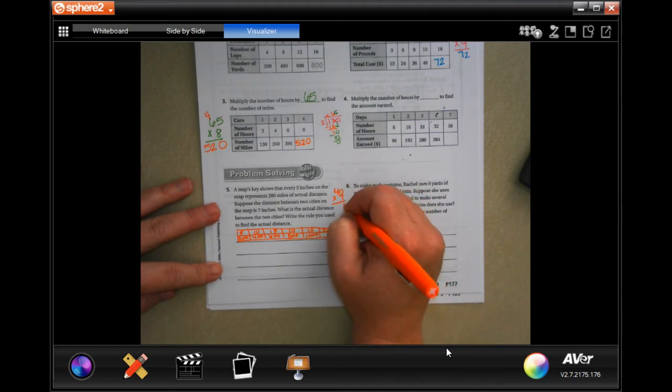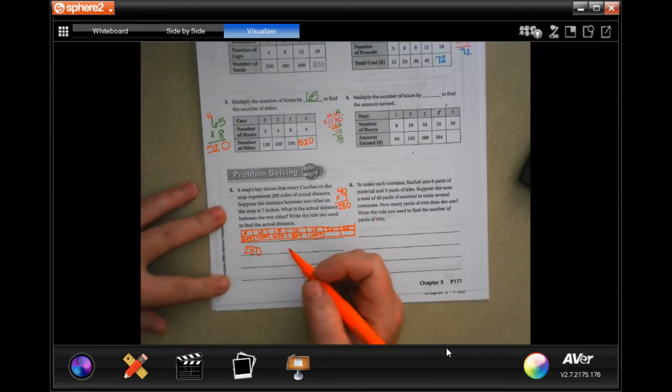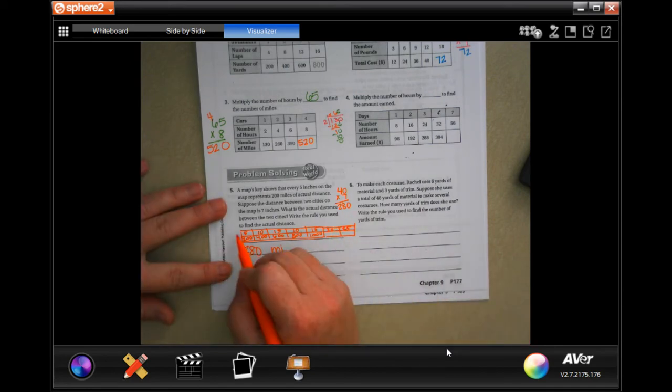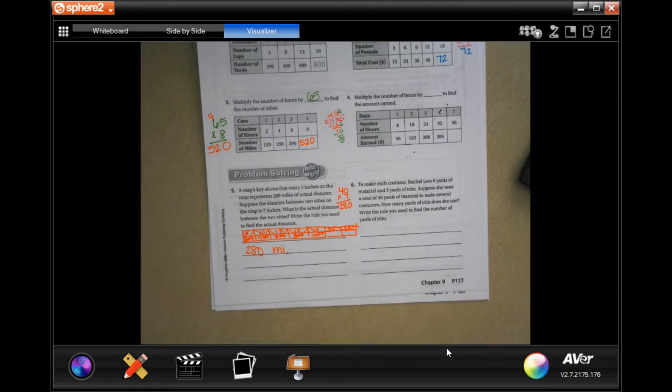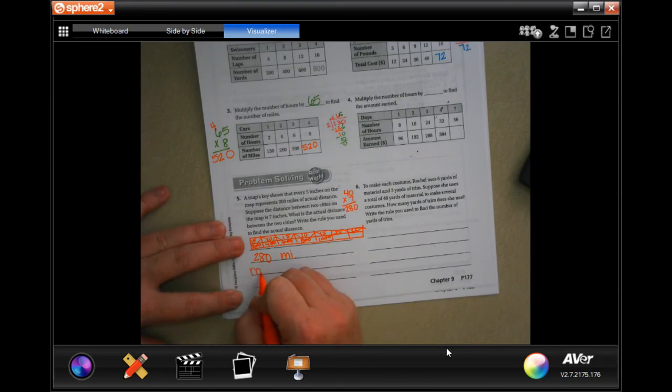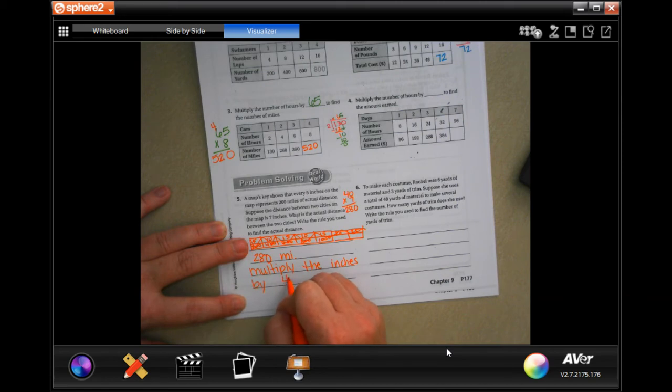Seven times zero is zero, seven times four is 28, so 280 miles. And write the rule: all we did was multiply the inches by 40.